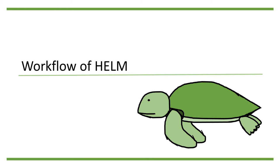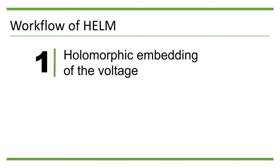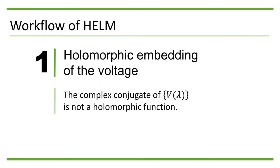Let us now go into the actual workflow of HELM. The first step is to embed the voltage and its complex conjugate with a holomorphic function. The reason why we need this holomorphic embedding is because the complex conjugate of V is not a holomorphic function.